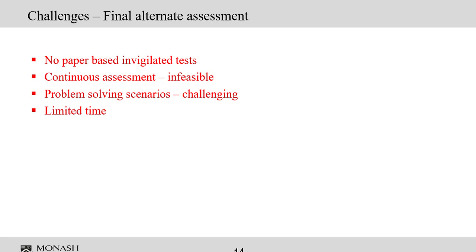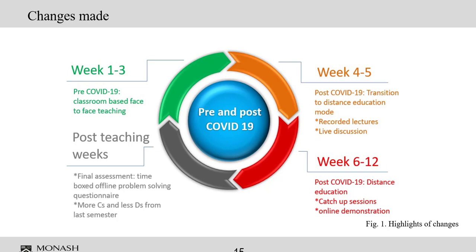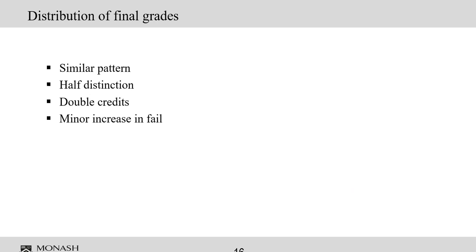For the final alternate assessment, asking theory-based questions was not suitable since all information was openly accessible. A continuous assessment format would have been most appropriate, but was infeasible given that three weeks of on-campus teaching had already occurred and we only began designing the alternate assessment after week six. Coming up with problem-solving scenarios where students could apply their knowledge was really challenging given the extremely limited time available. A diagram summarizes the key changes made throughout the semester timeline.